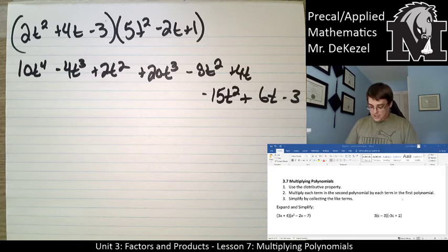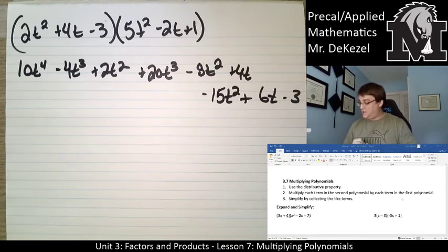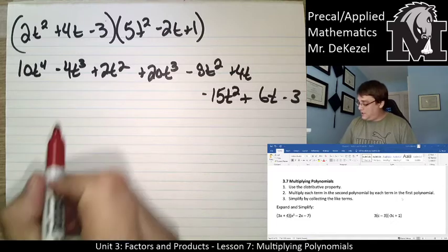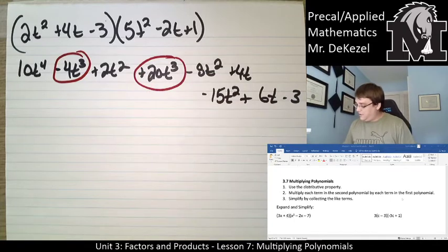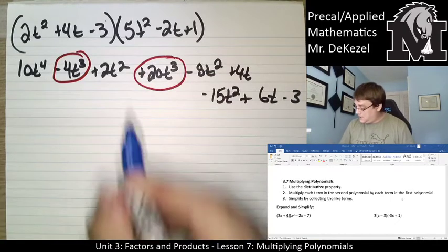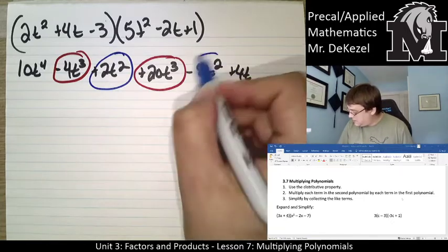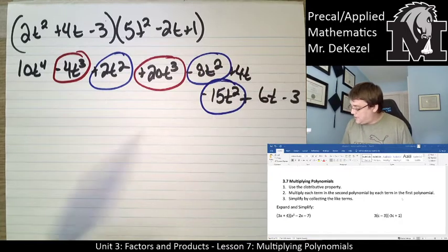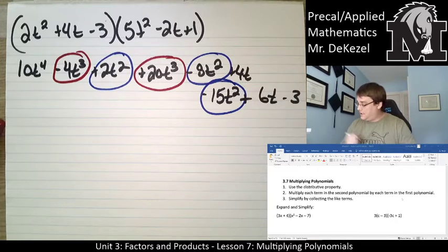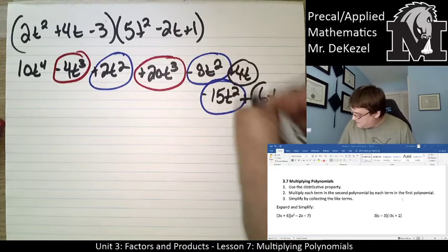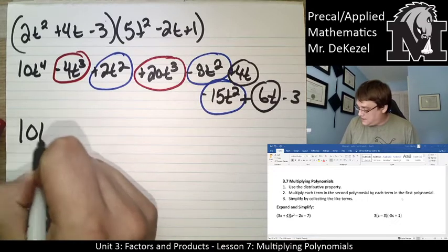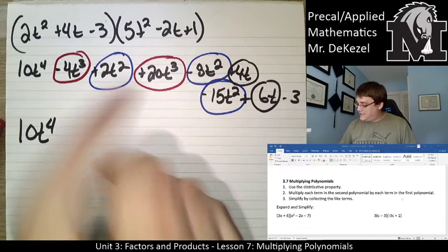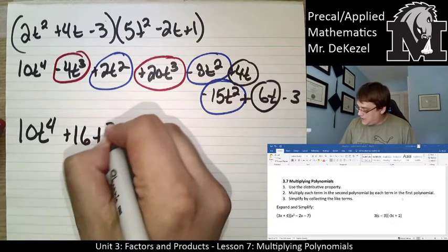I'm now going to combine all my like terms. And I'm glad I have a bunch of different colors so I can circle all these here. T to the power of 3 and t to the power of 3 are going to be combined together. T to the power of 2, t to the power of 2, t to the power of 2 are going to be combined together. And then regular t's are going to be combined together as well.